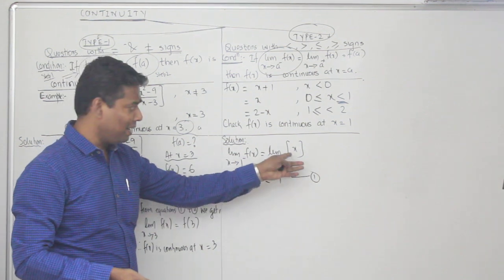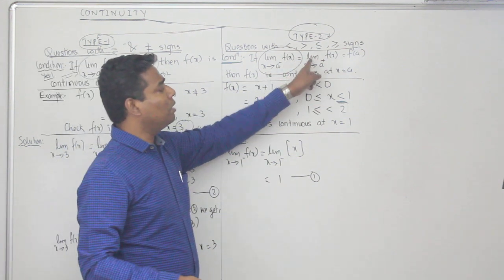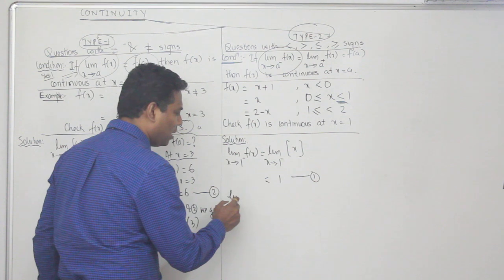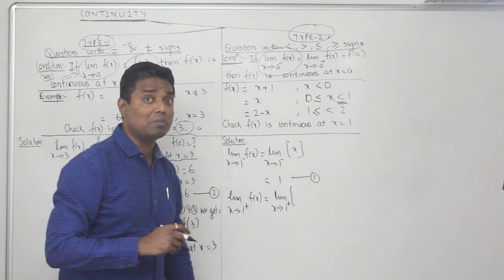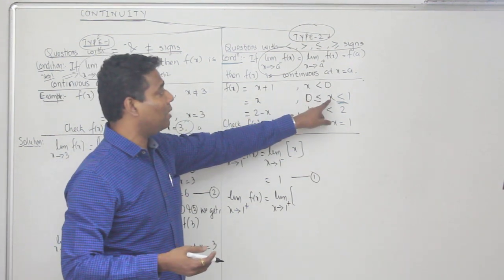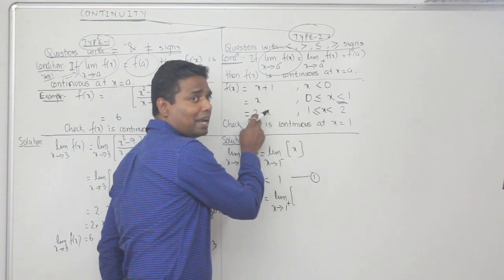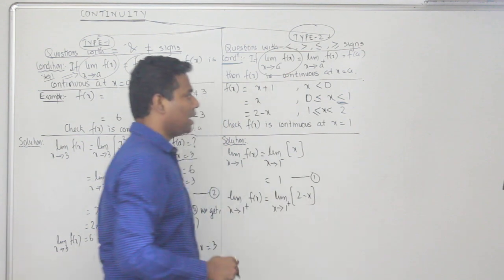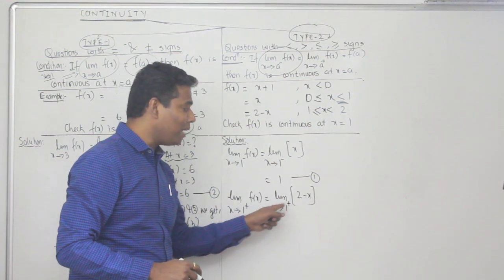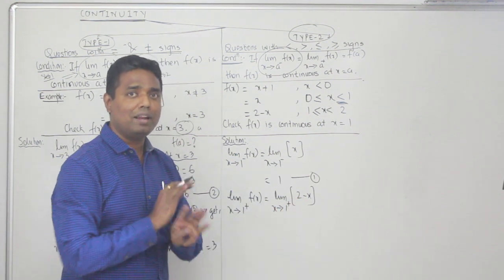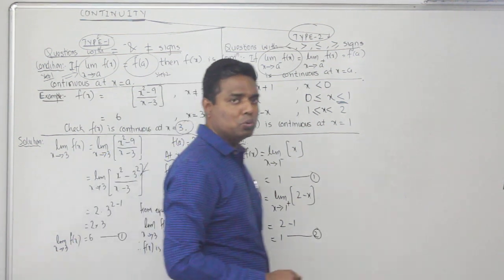Step 2: find limit x→1⁺ f(x). For x greater than 1, we use the function 2 - x (from the condition x ≥ 1). The denominator is 1, not zero, so we can directly substitute. Putting x = 1, we get 2 - 1 = 1. This is equation number 2. Check: both equations give value 1, so they are equal so far.